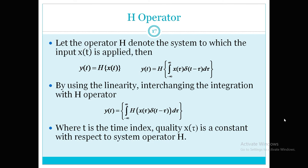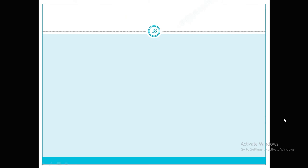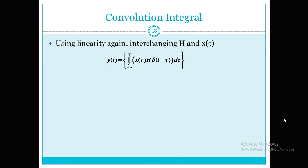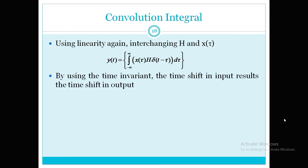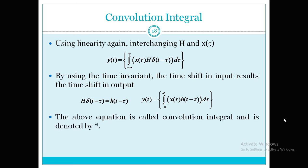We interchange x(τ) and H, and then we define H{δ(t − τ)} = h(t − τ). This comes from the time-invariant property: however much the input signal is shifted, the output signal must be shifted by the same amount. Substituting this, the final answer is the integral from minus infinity to infinity of x(τ) h(t − τ) dτ, which is called the convolution integral.